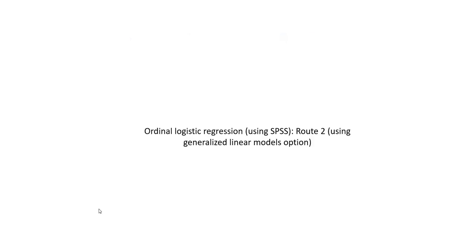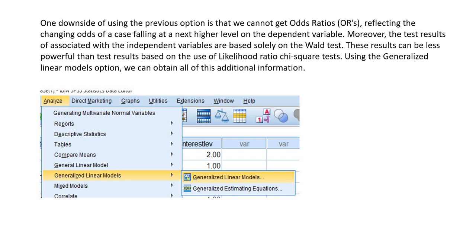So now let's look at Route 2 through SPSS. One downside of using the previous set of options is that we cannot get odds ratios reflecting the changing odds of a case falling at a next higher level on the dependent variable. Moreover, the test results associated with the independent variables are based solely on the Wald test, and these results can be less powerful than those based on likelihood ratio chi-square tests. So we can use the Generalized Linear Models option in SPSS to obtain this additional information.